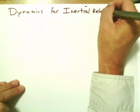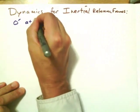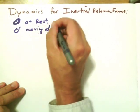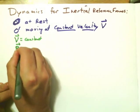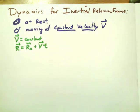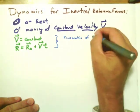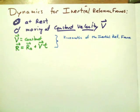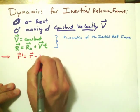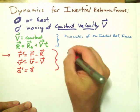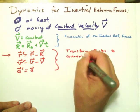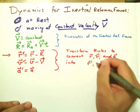Let's look at these transform rules in terms of the dynamics of motion for inertial reference frames. To recapitulate: the O frame is at rest, and the O-prime frame is moving at constant velocity capital V. The kinematics of that frame give position equal to R-naught plus Vt. For the bodies themselves, position in the prime frame is R-naught plus Vt, velocity is V-naught plus Vt, and A-prime equals A. These are the transform rules for converting R, V, and A to R-prime, V-prime, and A-prime.